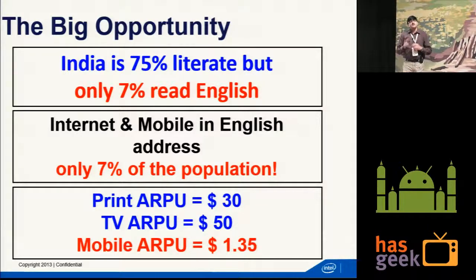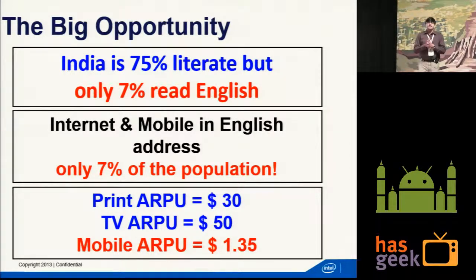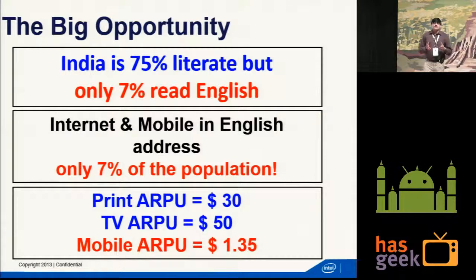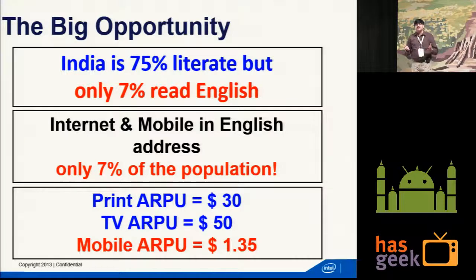One of the important questions I always get is: is there money in building applications and services in local languages? The answer is yes. If you look at other media which are very successful in India — print media — the average revenue per user annually is $30. On television for local language consumption it's $50. Whereas on the mobile side the ARPU is $1.35. And as an analogy — if you take China as a market where the entire ecosystem is very easily available in local languages, starting right from consumption of text, typing and interaction, and content access — the ARPU there is around $10 to $11. So it's almost 8 to 10 times bigger than what India has got. There is a very, very large opportunity to tap into.